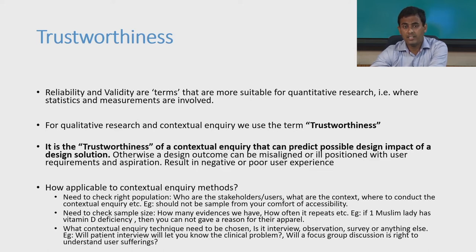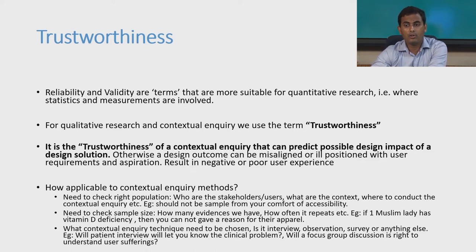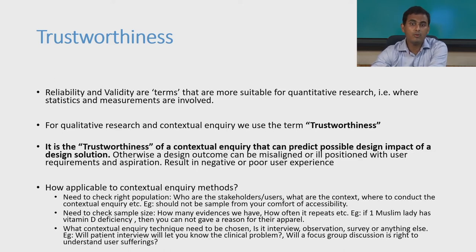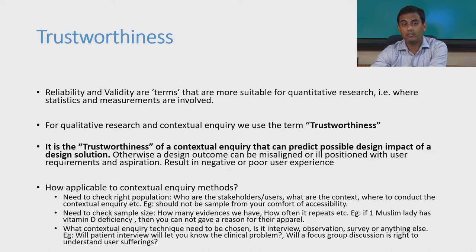However, reliability and validity are terms mostly useful for quantitative research where statistics and measurements are involved. In qualitative research and contextual enquiry, we use the word trustworthiness. When we go for a contextual enquiry and perform observations, field study, or interviews, whatever inputs we get are qualitative — dialogues, descriptions. We use the term trustworthiness. It is the trustworthiness of a contextual enquiry that can predict the possible design impact of a design solution. As a researcher or designer, our goal is to make the contextual enquiry trustworthy, and it is a strategy to be implemented.